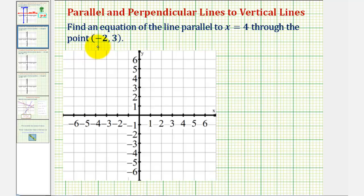And now for a second example, let's find an equation of a line that's parallel to x equals four, passing through the point (-2, 3). X equals four would be this vertical line here. Again, if we needed to, we could make a table of values like we did on the first example.